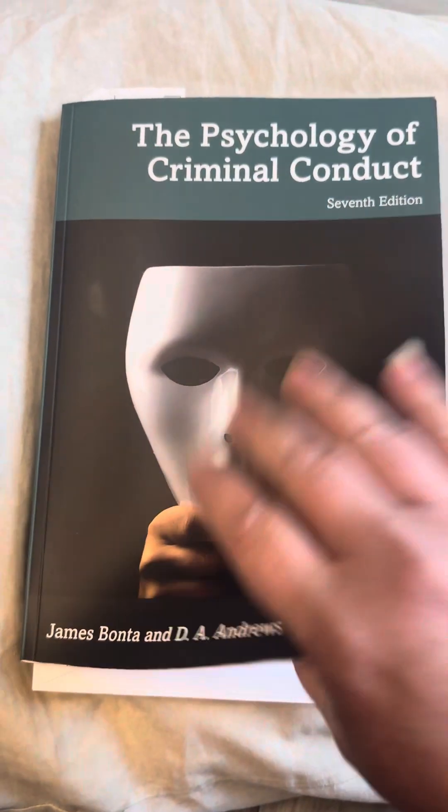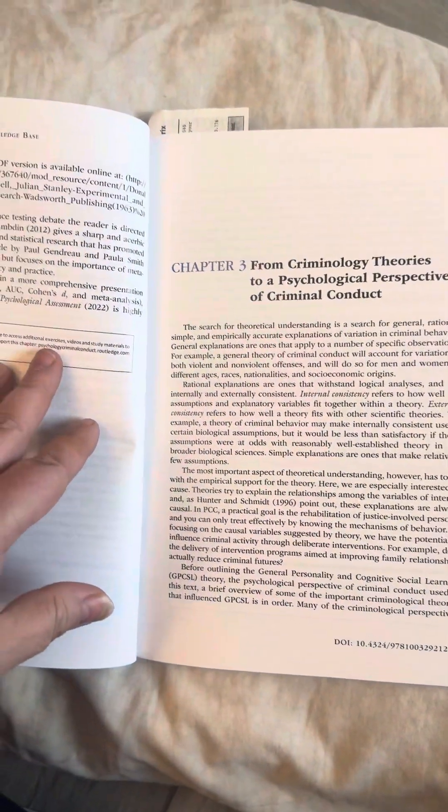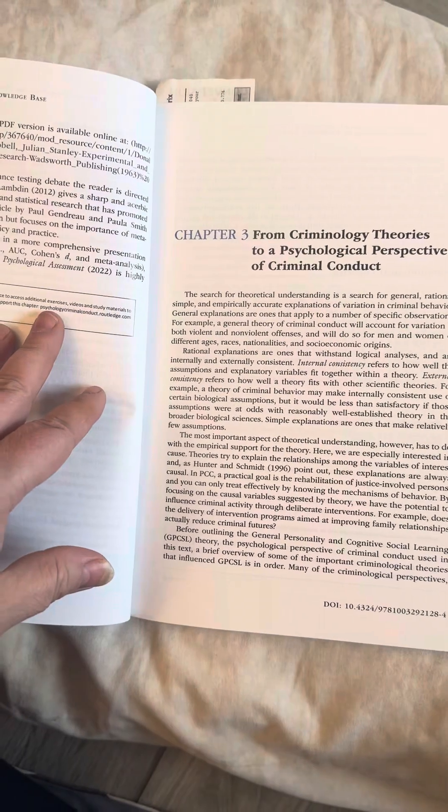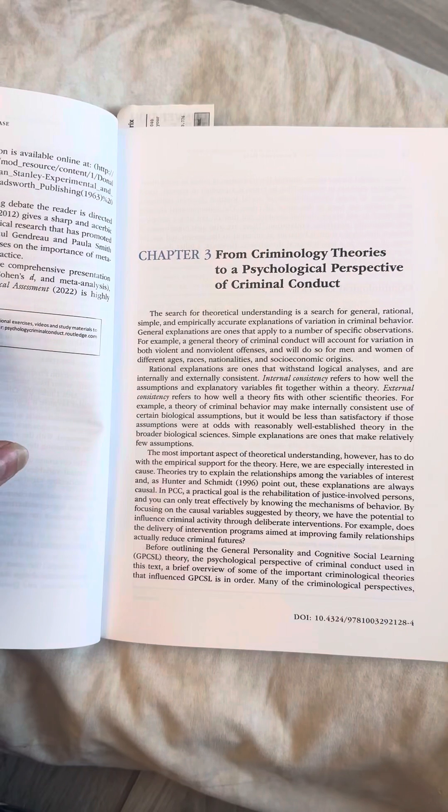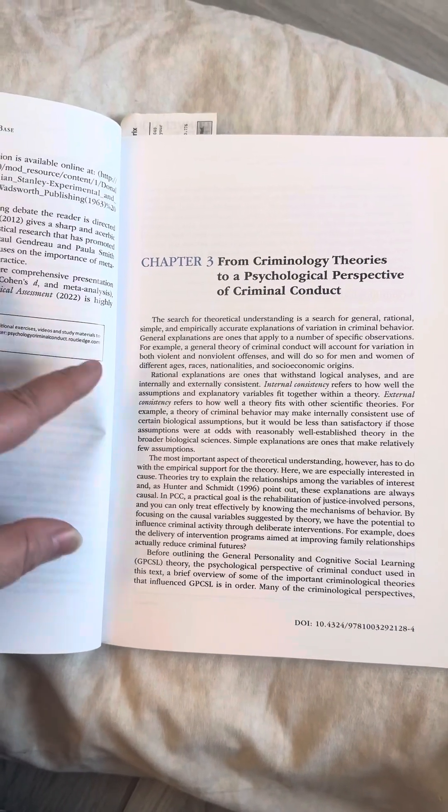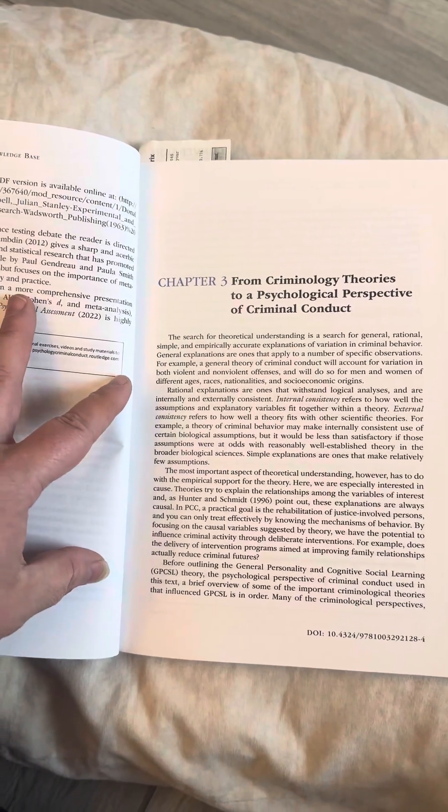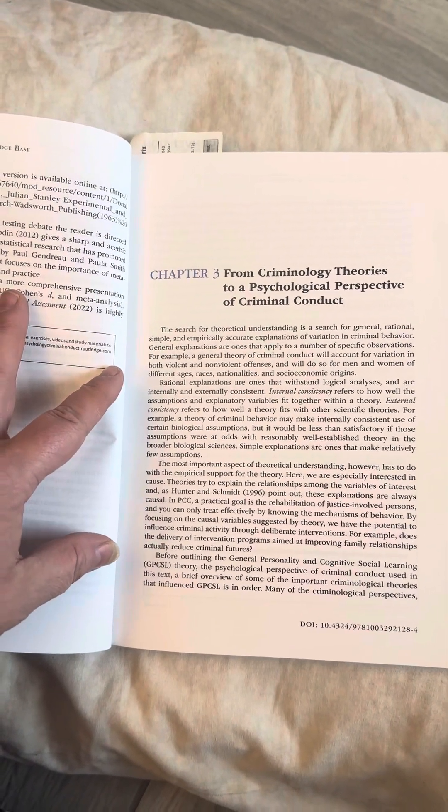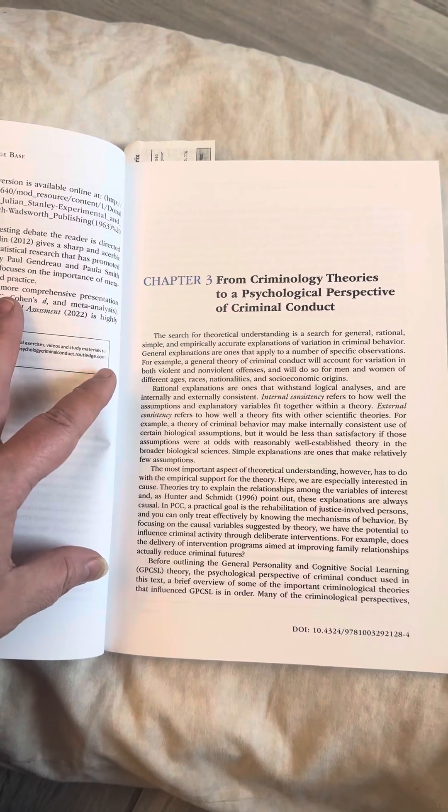The Psychology of Criminal Conduct, Chapter 3. From Criminology Theories to a Psychological Perspective of Criminal Conduct. The search for theoretical understanding is a search for general, simple, and empirically accurate explanations of variation in criminal behavior. General explanations are ones that apply to a number of specific observations.